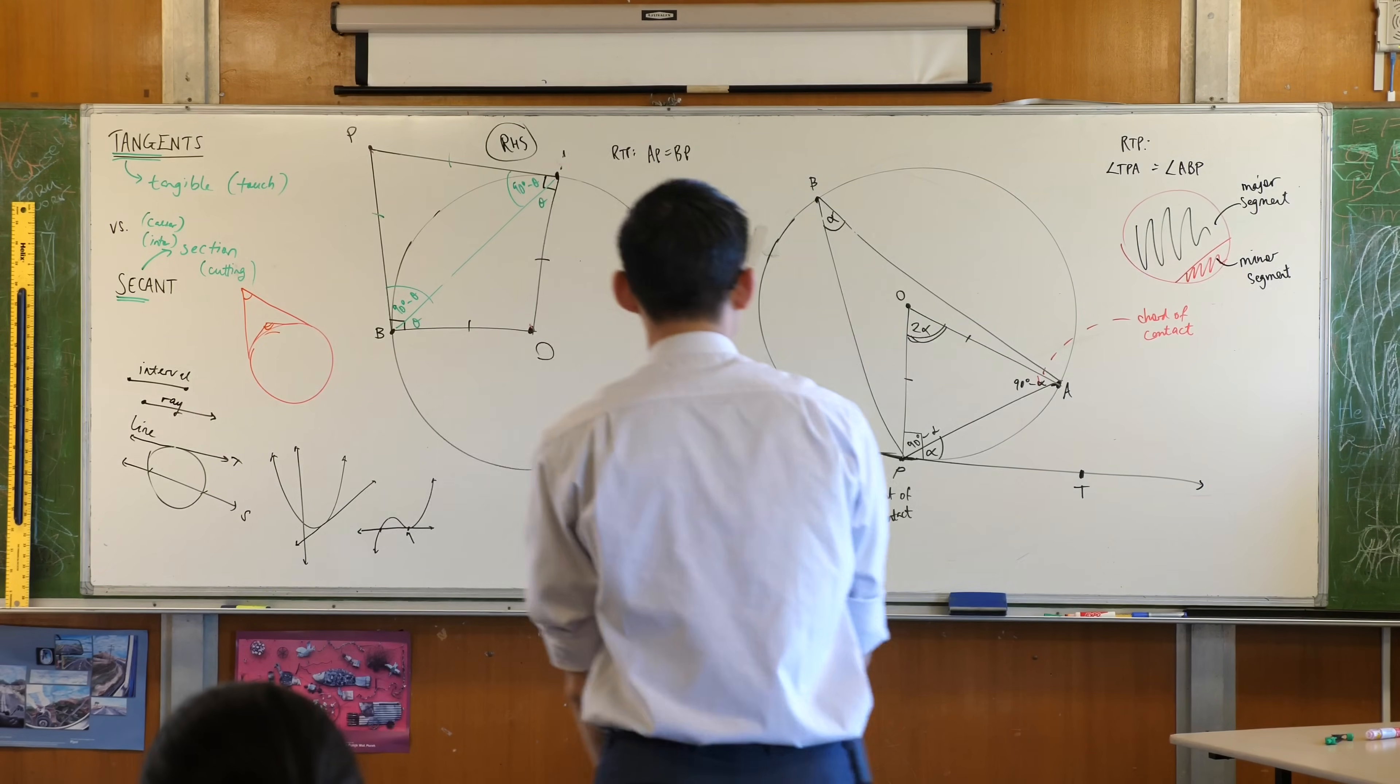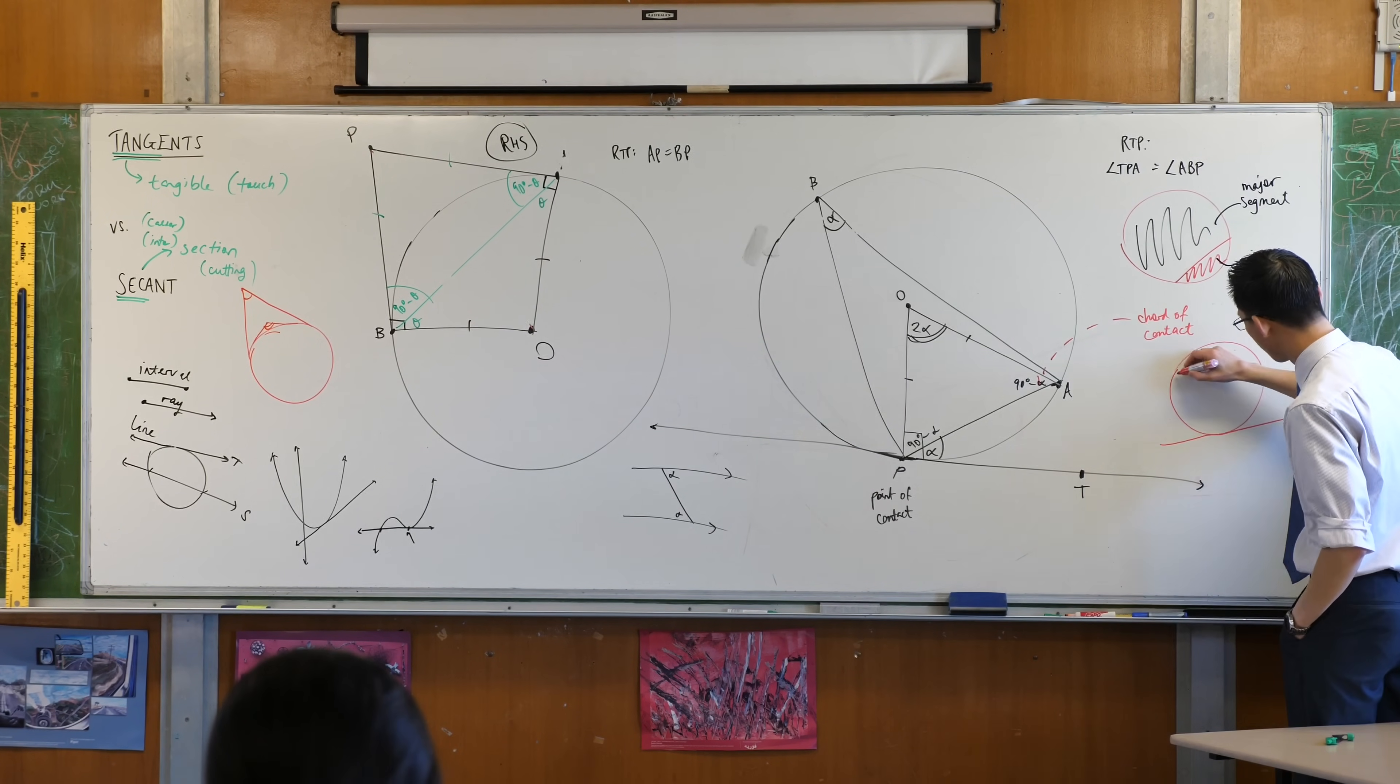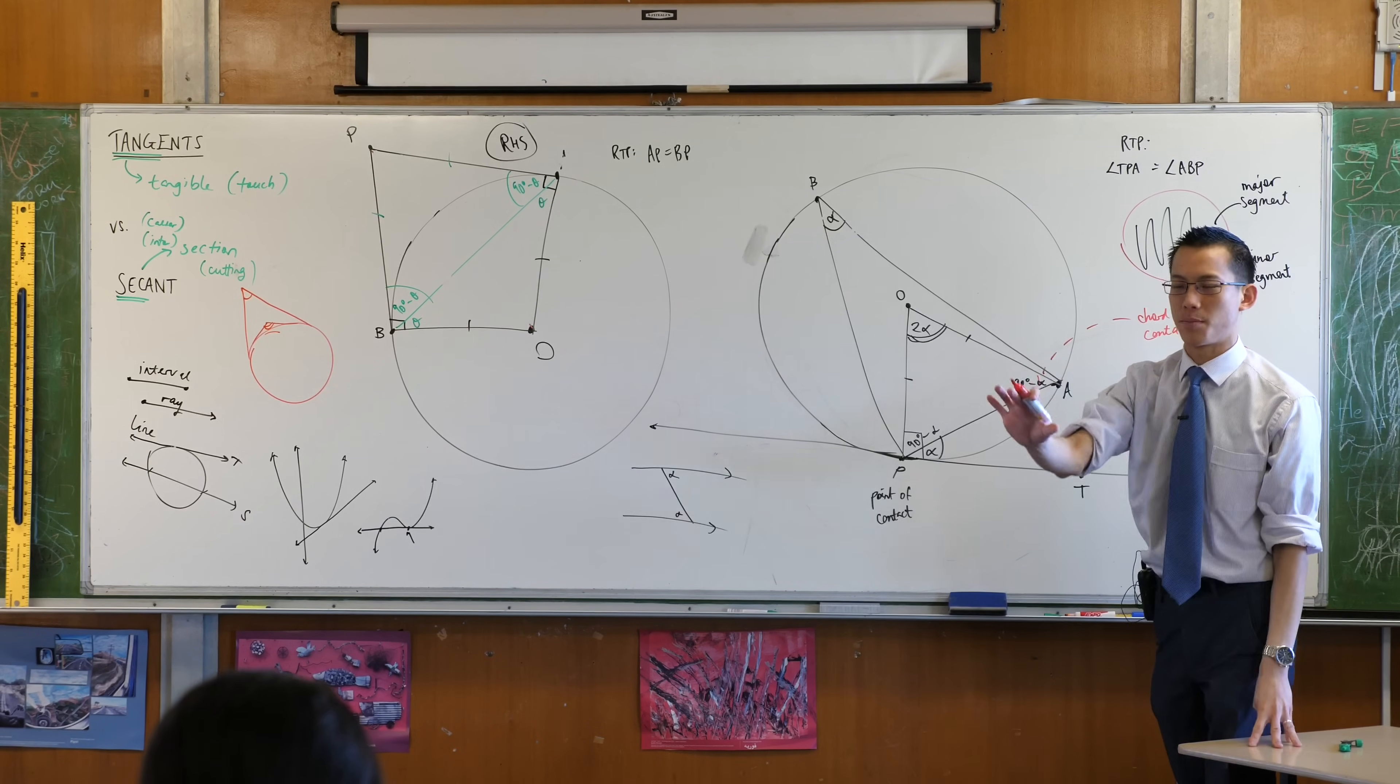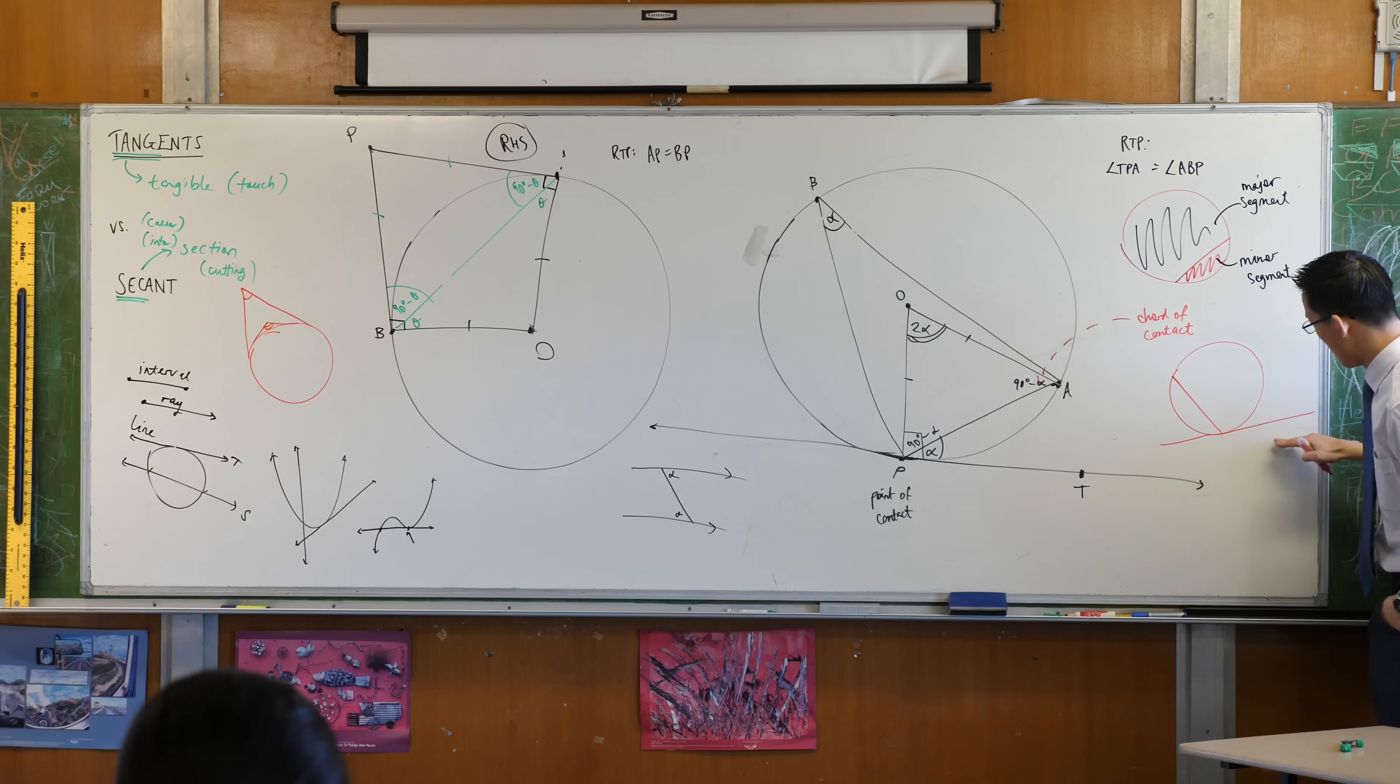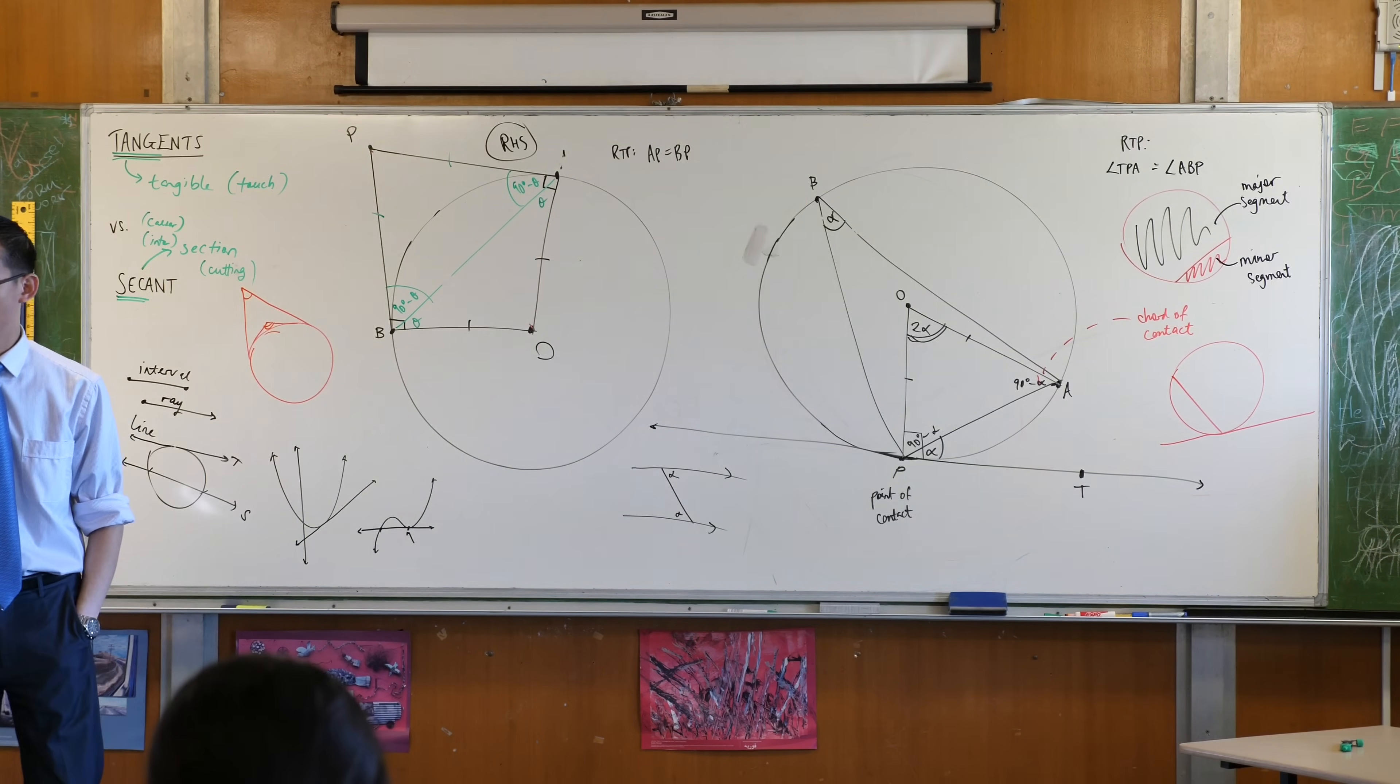So in fact, let me draw you one that isn't. I'm going to redraw it like this. Sorry, just for everyone while you're packing up, don't draw this, but just watch it because Chloe asked a great question, which was, is the alternate segment always the bigger one? And the answer is no. Watch this. Tangent, chord of contact. Now when I say the angle between the tangent and the chord of contact, do you notice there are actually two? Do you see that?